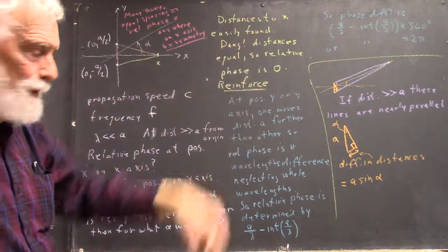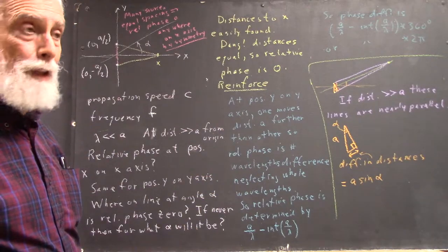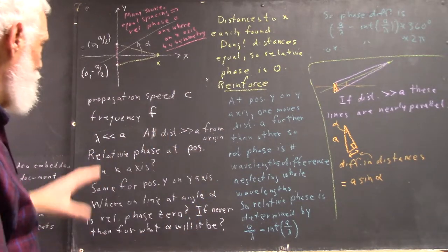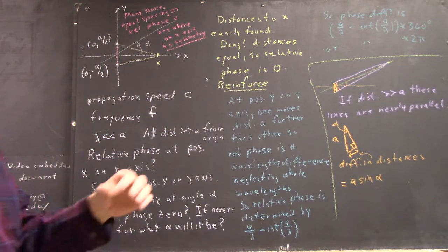When you do the sine or cosine of that relative phase, you're going to get zero if you have the sines and cosines. I'm being a little vague about that. I don't want to write out the expressions, but that's a really good way to look at it.